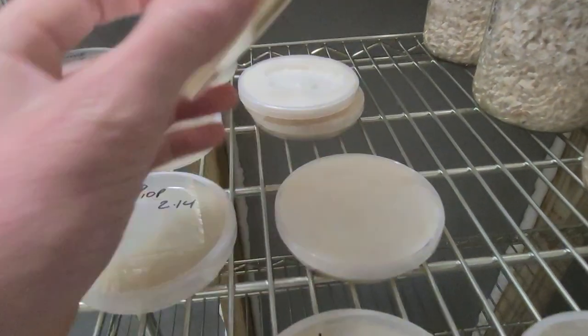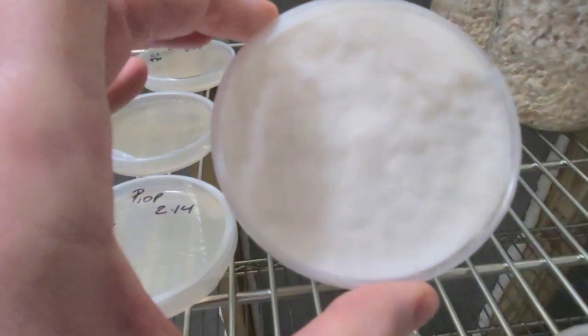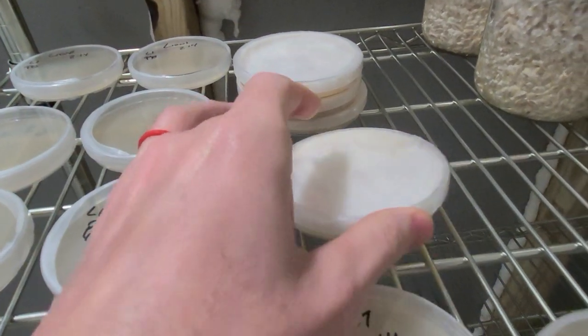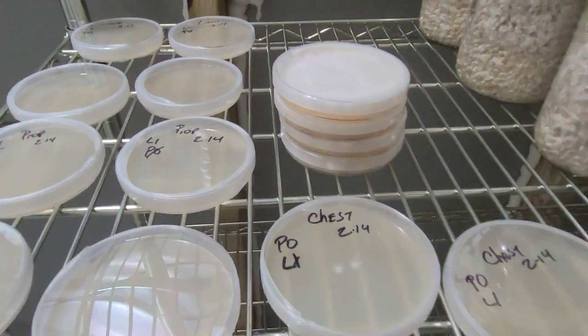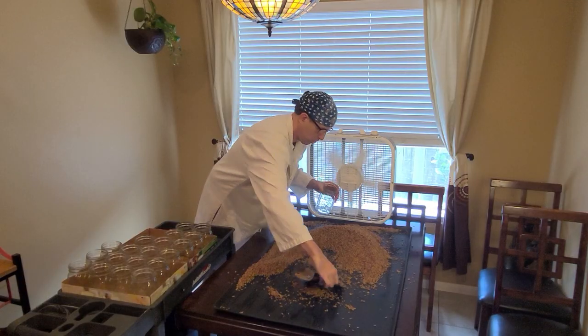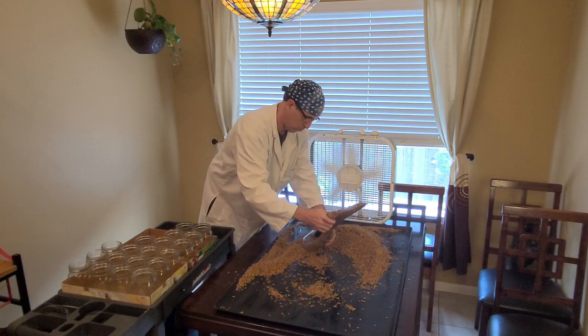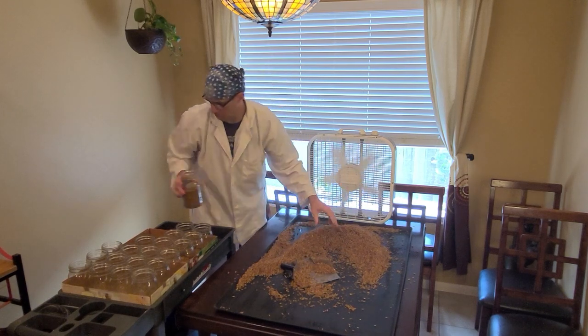Alright, once the plate is nearly fully colonized and free of contamination, it is time to move on to the next phase, which is either grain spawn or liquor culture, or perhaps both, depending on your needs. I hope this was helpful for you, and I thank you for watching. I'll see you in the next video where I explain how I make grain spawn.